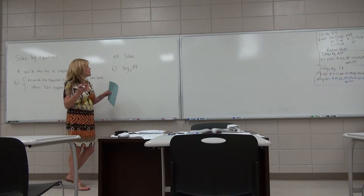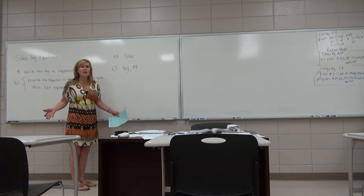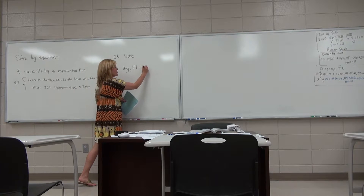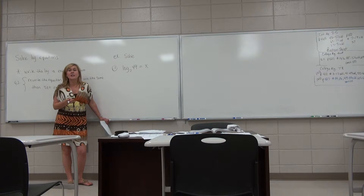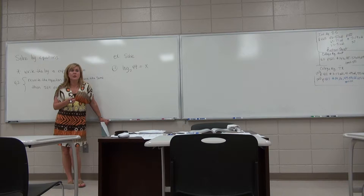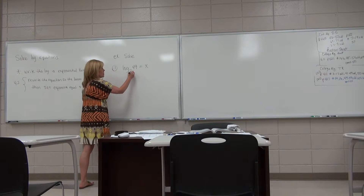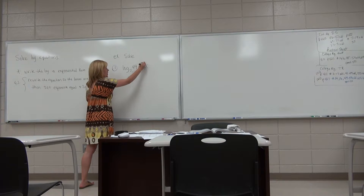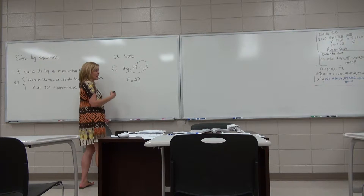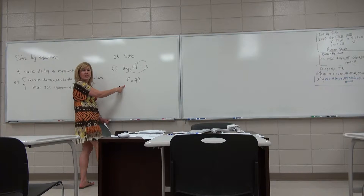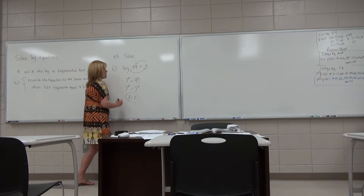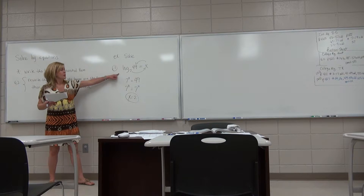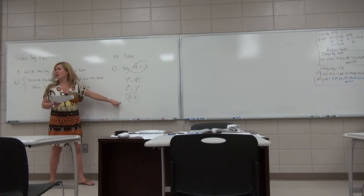In a logarithm, we can have our unknown in one of three places: your unknown could be the base, the power, or the answer part. For example, log base 7 of 49 equals x. You want to know: 7 to what power equals 49? That's 7 to the x equals 49. You can tell by looking — 7 to what power is 49? The answer is 2, so x equals 2. Or you can write 7 to the x equals 7 squared, so x equals 2.